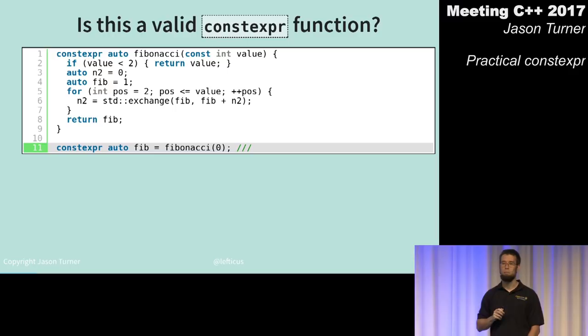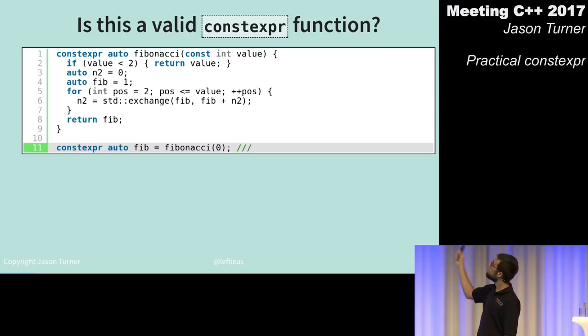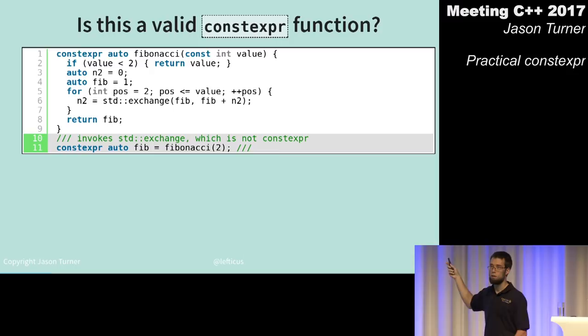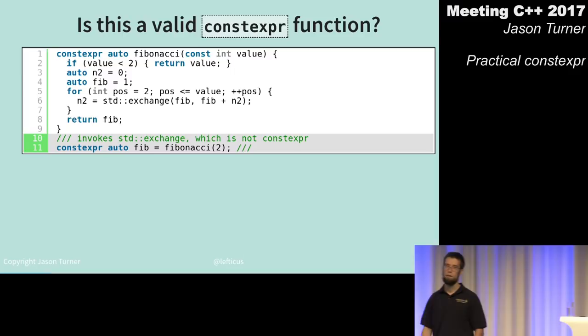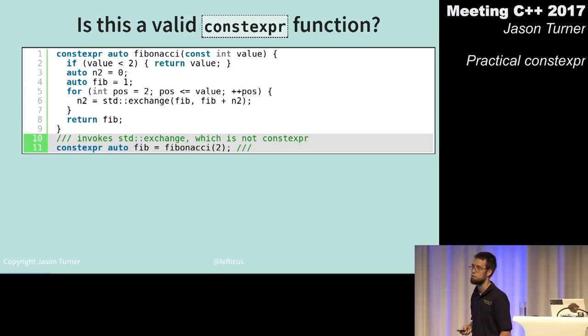Up to that point the compiler wasn't trying to execute std::exchange in the constexpr context, but now it has to. std::exchange is not constexpr, so this fails to compile because we've passed in a parameter that causes it to execute a code path that can't run in a constexpr context.